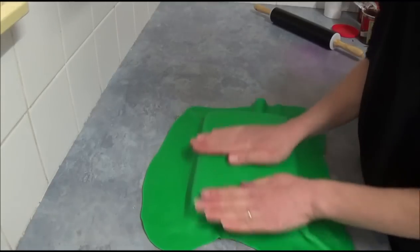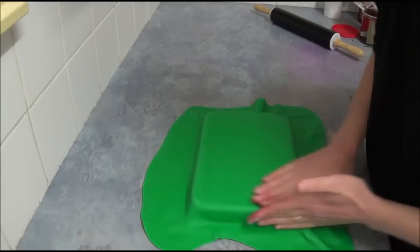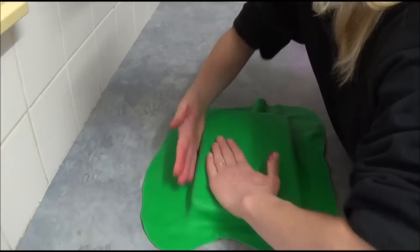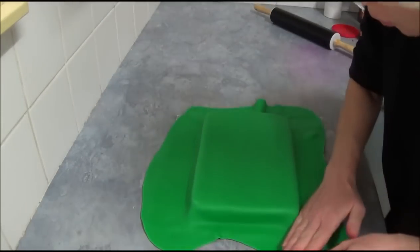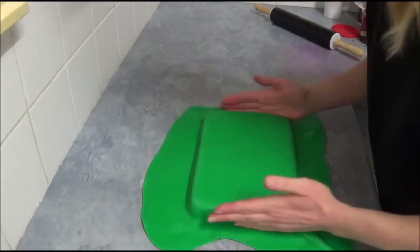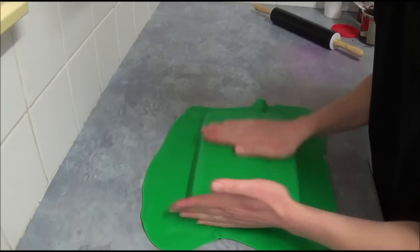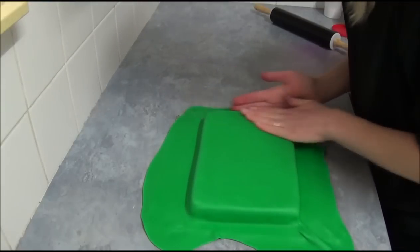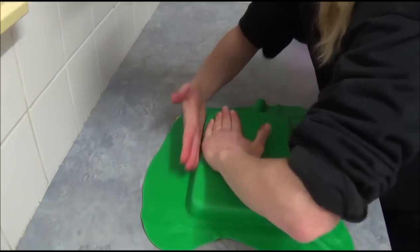We start working from the top, make it nice and smooth, go through the edges as well. It depends how warm in your kitchen. If it's probably too warm, your fondant might be a little bit sticky to your hands. Apply very small amount of powdered sugar to prevent sticking, but not too much because you don't want to spoil the green color of the cake.